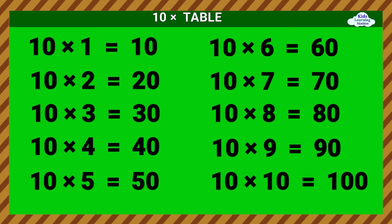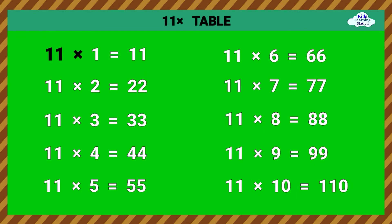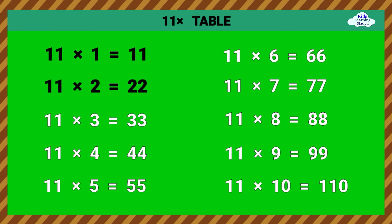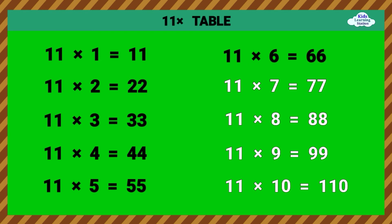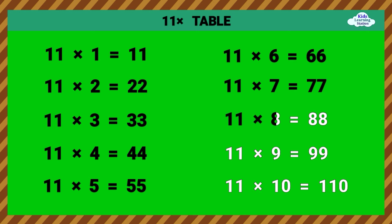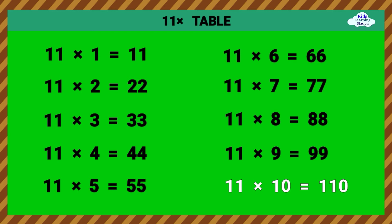Eleven Times Table. 11 times 1 equals 11. 11 times 2 equals 22. 11 times 3 equals 33. 11 times 4 equals 44. 11 times 5 equals 55. 11 times 6 equals 66. 11 times 7 equals 77. 11 times 8 equals 88. 11 times 9 equals 99. 11 times 10 equals 110.